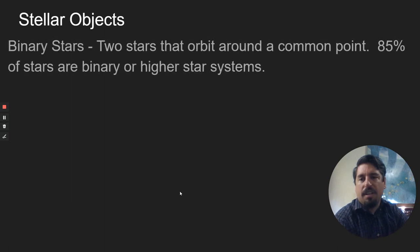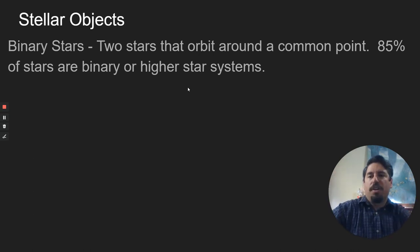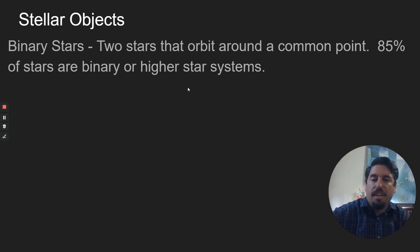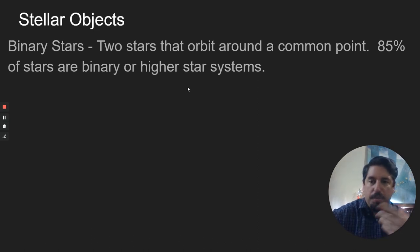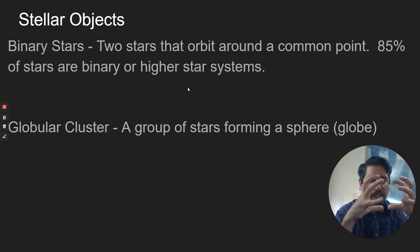Stellar objects: binary stars are two stars that are orbiting around each other. Most stars are binary stars — our solar system only has the sun, just one star, but most star systems have two stars. 85% of them are binary star systems. You can have higher orders too — Alpha Centauri has three stars circulating around each other. You can have multiple star systems moving around. A globular cluster is a group of stars forming a globe — stars kind of arranged in a sphere.